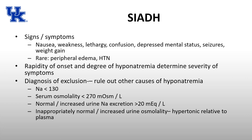SIADH is really a diagnosis of exclusion — you have to rule out all other causes of hyponatremia. What you'll see is a sodium less than 130, a low serum osmolality because you have too much ADH and are retaining water. You would have a normal or increased urinary sodium, which you would not expect in someone volume overloaded. And you would have an inappropriately normal or increased urine osmolality — your urine is going to be more hypertonic than plasma — which again is not what you'd expect for someone who is volume overloaded.